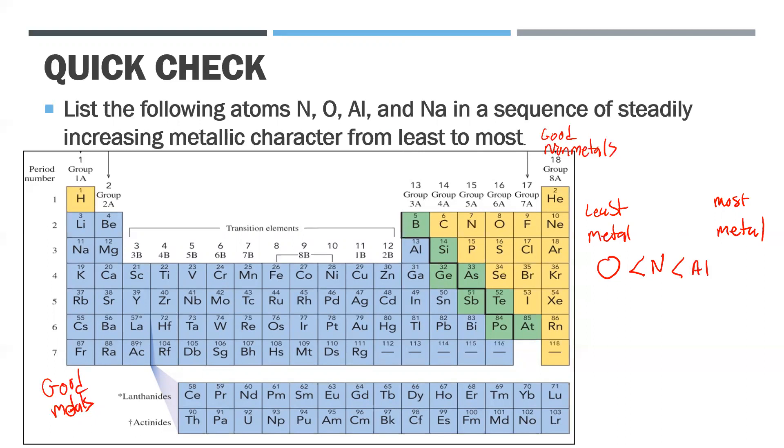Then aluminum. What do I notice about aluminum? It's in the third energy level rather than the second energy level, so that valence shell is further away. It's a bigger atom, it's easier to lose electrons, plus it's a metal.